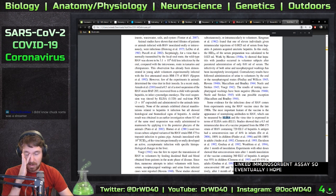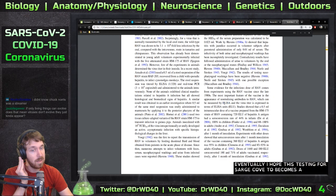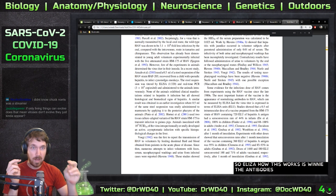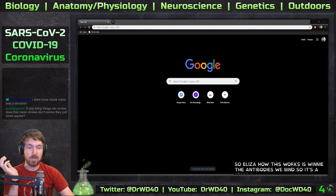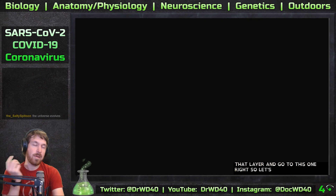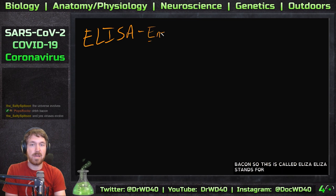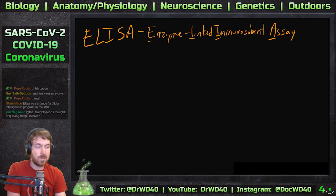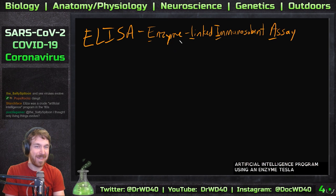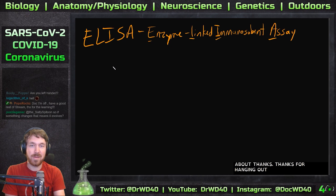Eventually, I hope testing for SARS-CoV-2 becomes an ELISA test. Let's design an ELISA test for SARS-CoV-2. ELISA stands for Enzyme-Linked Immunosorbent Assay — using an enzyme, antibodies, and an assay. Let's imagine we're designing a test for SARS-CoV-2 and see how these tests work.